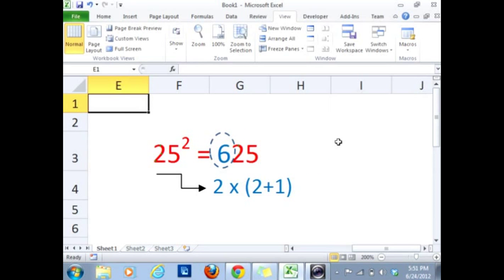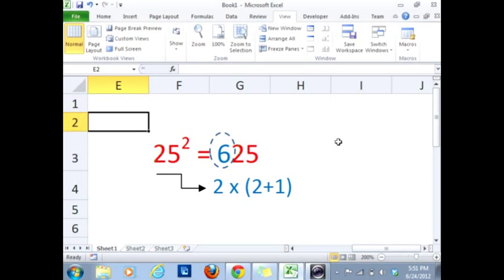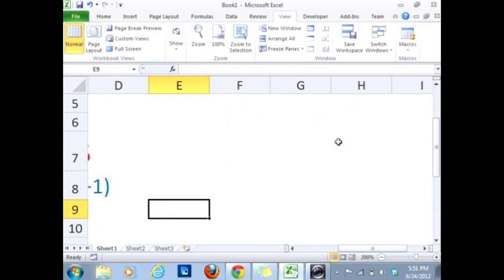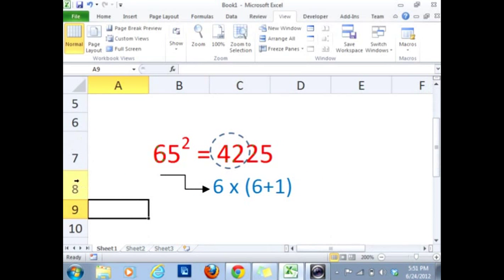If I have more bigger numbers like 65, then I can use the same technique. For example, here, 65 square will be 6 multiplied by its increment, which is 7. So 6 times 7 is 42. So I will say 4225.